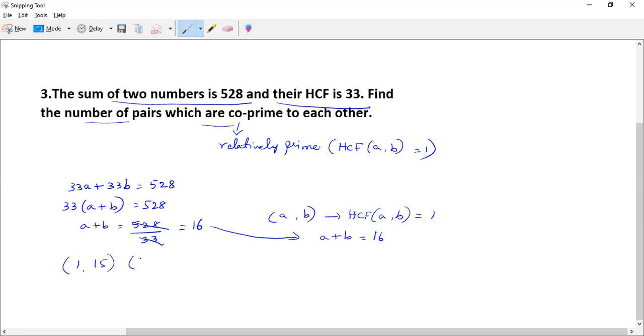If I take 2 and 14, you won't get it. 3 and 13, you will get - the HCF is 1. Then 4 and 12: if I take 4 and 12, the HCF is not equal to 1.